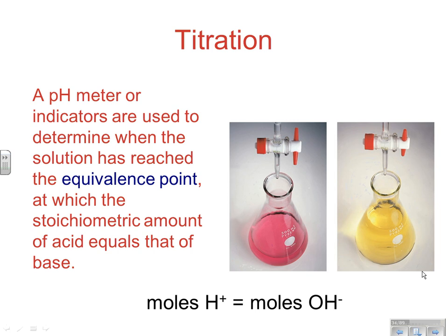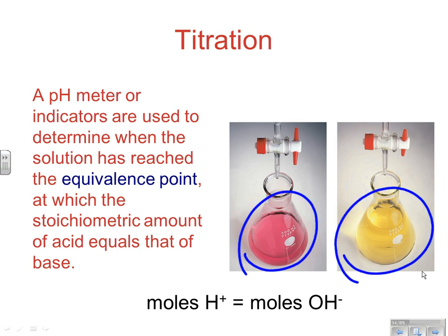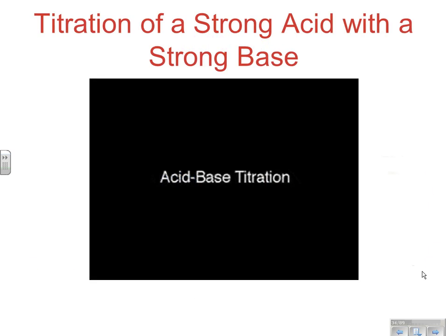Don't confuse this with the end point. The end point of a titration is the point at which you stop the titration — typically when a color change occurs in the indicator. If you've done things appropriately, you've picked an indicator that hits an end point at the equivalence point. You need to target your indicator so it undergoes its color change at the equivalence point or stoichiometric point.